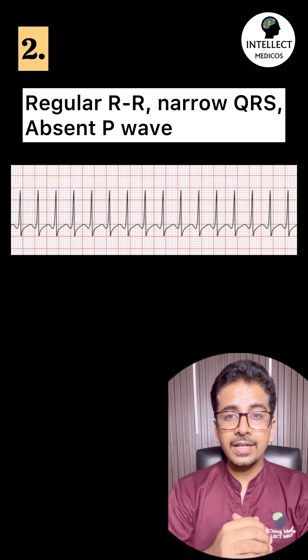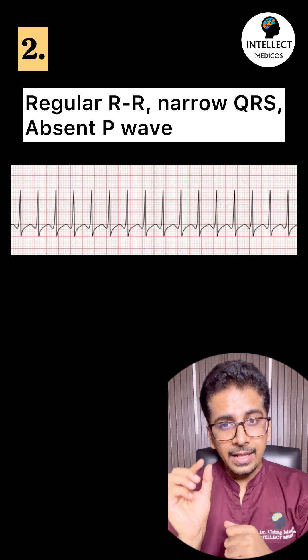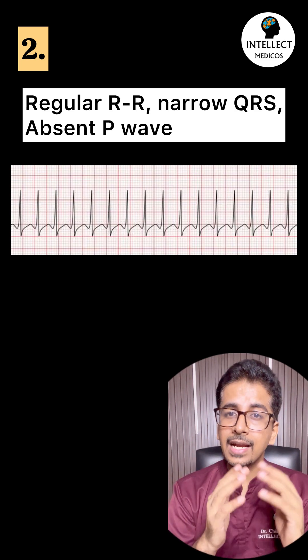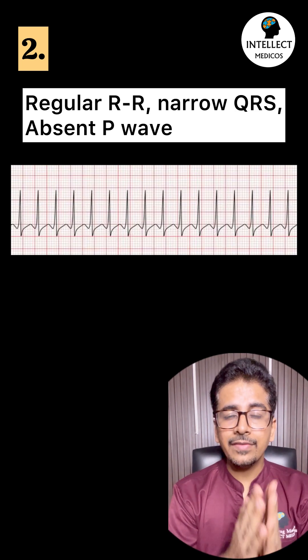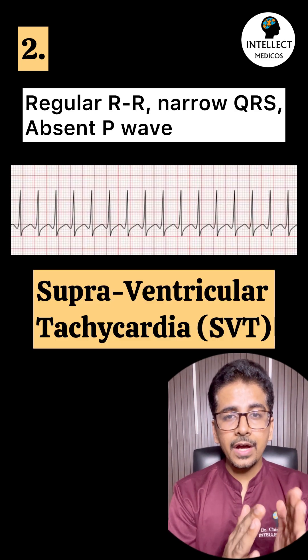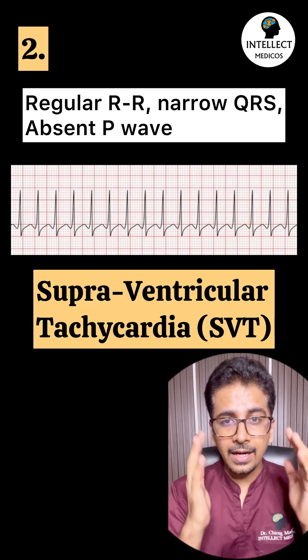Second: regular RR interval with narrow QRS and absence of P-wave. This is supraventricular tachycardia.